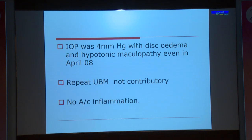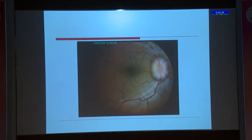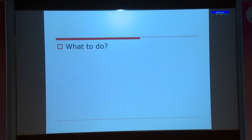Repeat UBM was not contributory and there was no evidence of any anterior chamber inflammation. This was the optic disc picture showing dyskhemia and hypotonic maculopathy. The pressures continued to remain low and hypotonic maculopathy persisted for almost two months. The question was what to do at this stage — we were really at our wits' end.